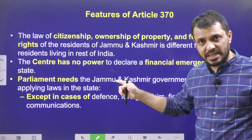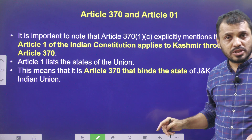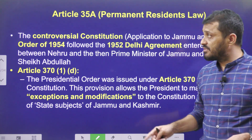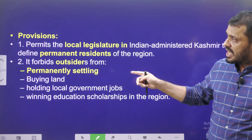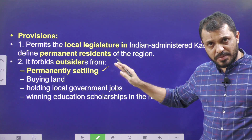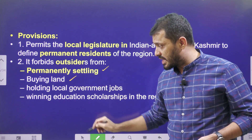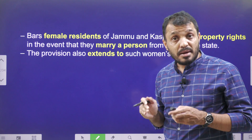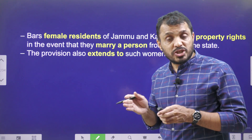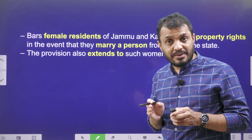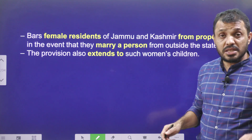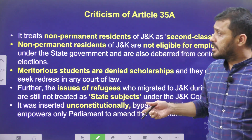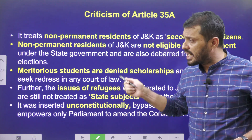Article 370 allowed Jammu & Kashmir to have separate laws regarding citizenship, a separate constitution, and a separate flag. Article 35A restricted land purchase, government jobs, and government scholarships to permanent residents of J&K only. Because of these restrictions, private investment from outside J&K did not happen much. Article 35A also did not allow J&K women who married outside J&K to claim property rights.